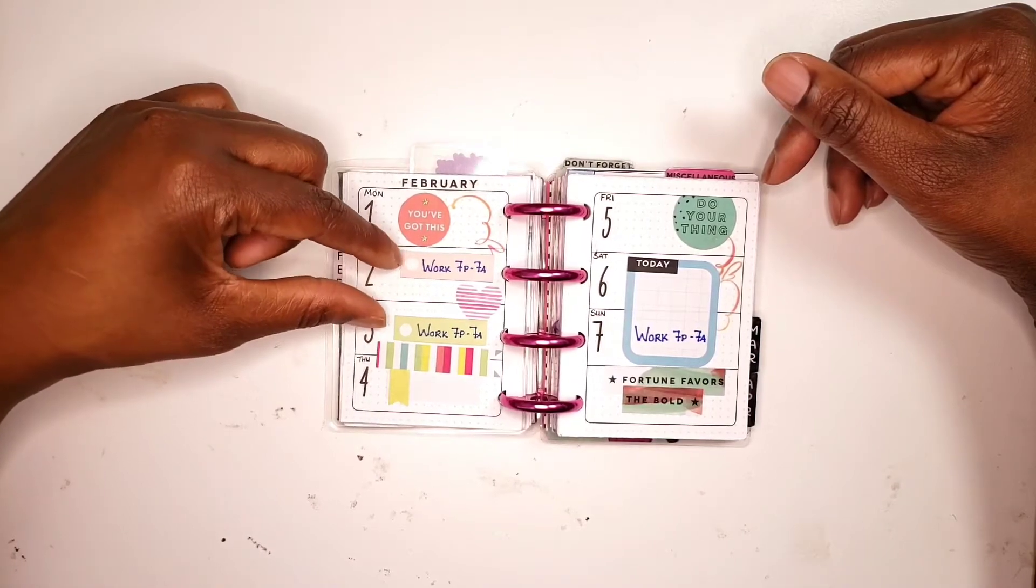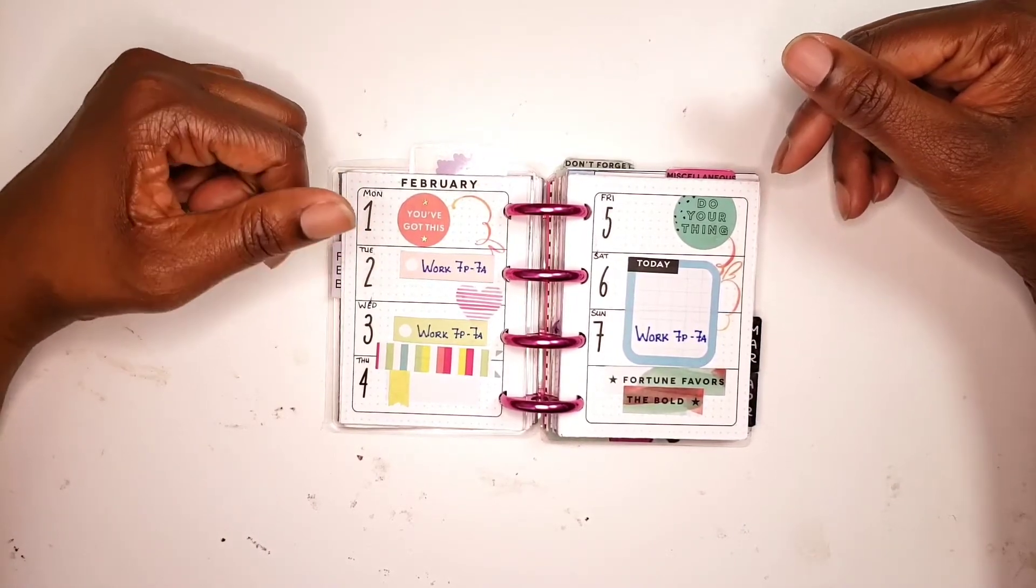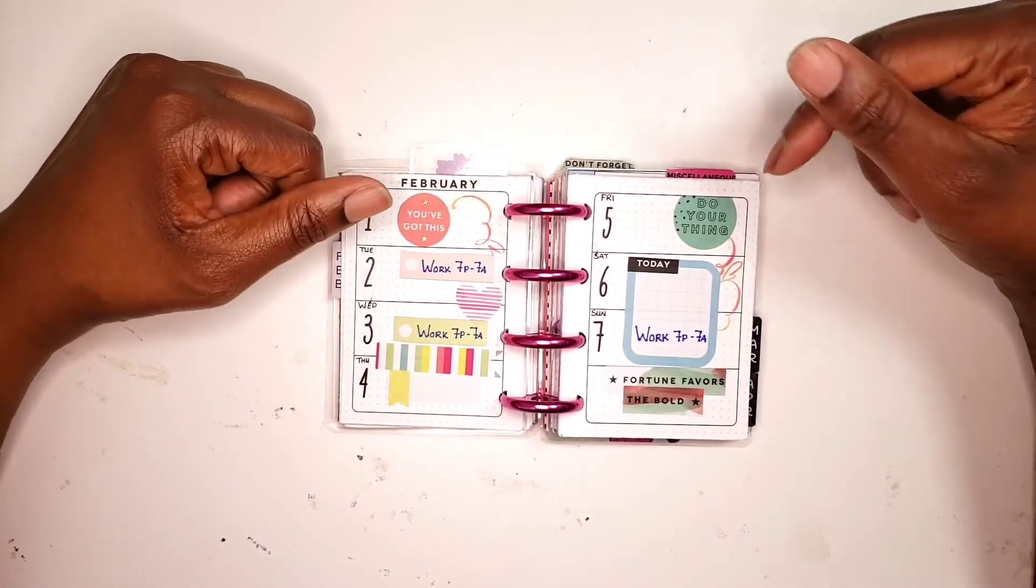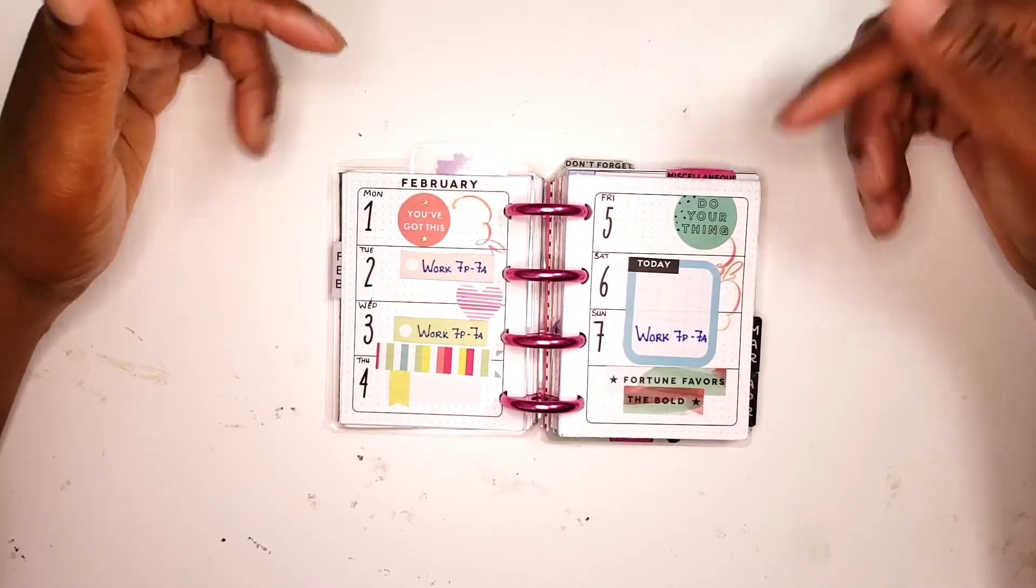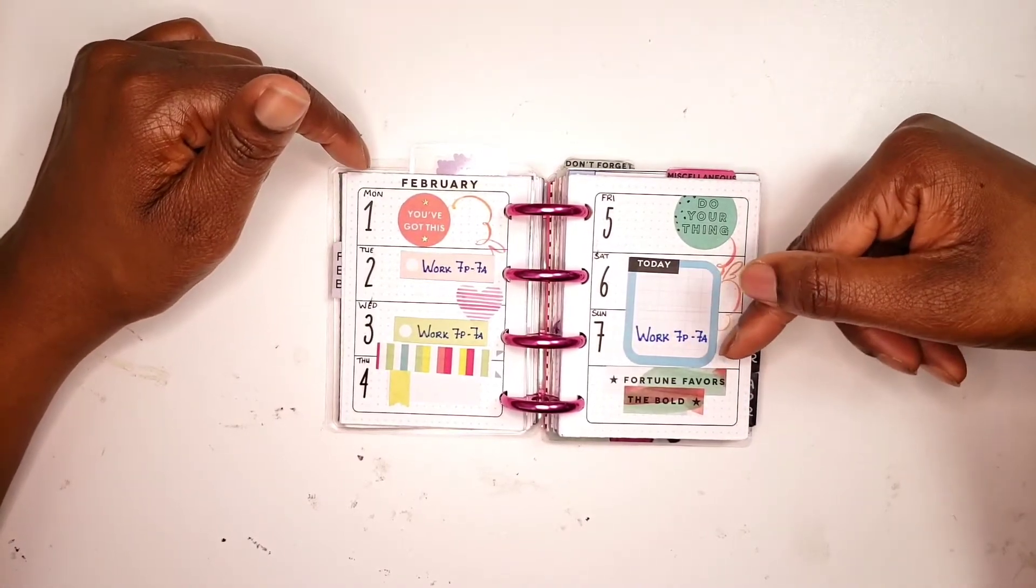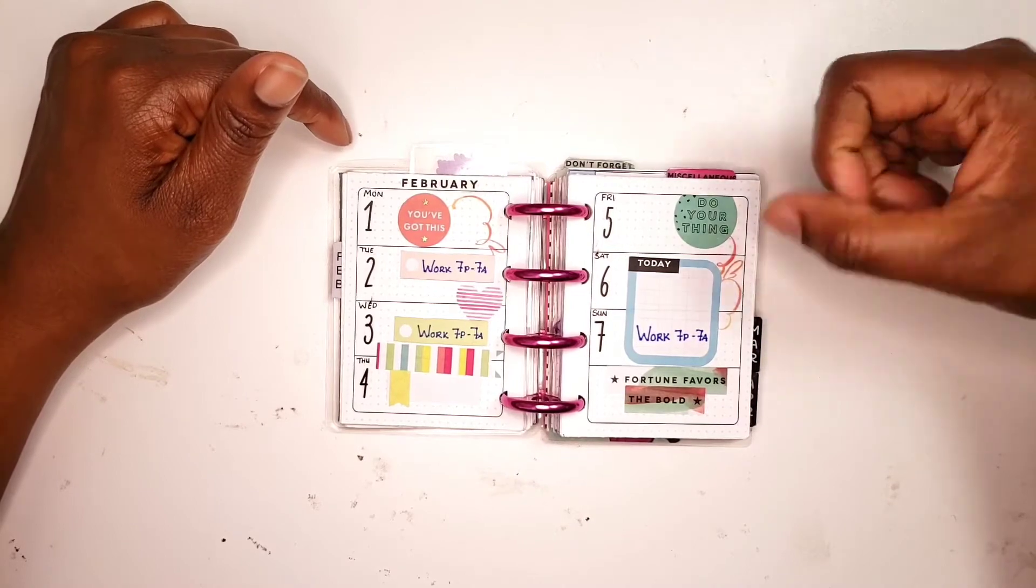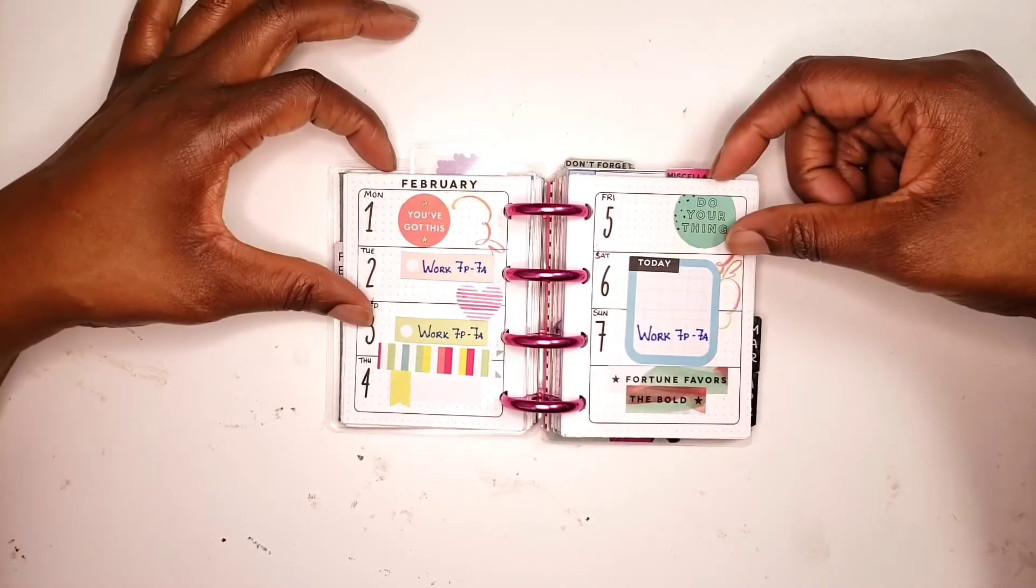And then the box, because I like to use box stickers to indicate work, which I always forget when I'm looking at a calendar to look at Sunday to see if I'm working. So that's why I did that one that way.